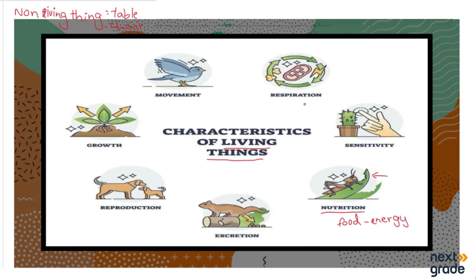There is another characteristic and that is respiration. Respiration means that both plants and animals take in oxygen and give out carbon dioxide. These are the gases that living things intake and release.